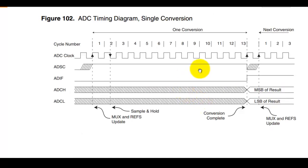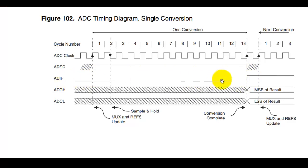This timing diagram shows the first conversion completed and subsequent conversions. After the first conversion, it takes only 13 clock cycles each time. Enable the ADSC to start conversion, then ADIF will automatically go high. Monitor ADIF to confirm the conversion is complete, then read the results from ADCH and ADCL. Note: you must first read ADCL, then read ADCH.